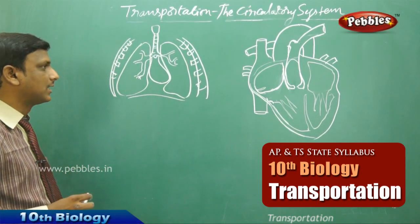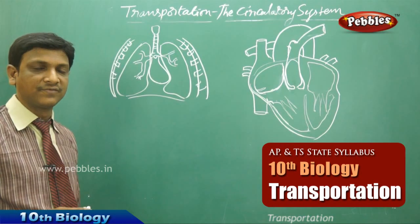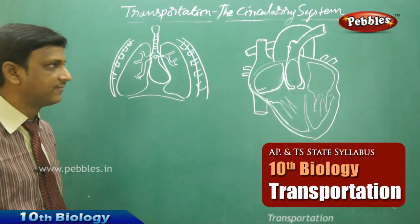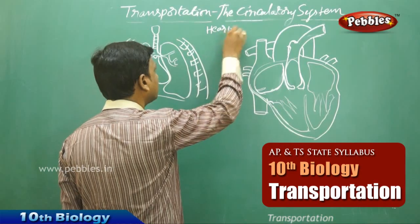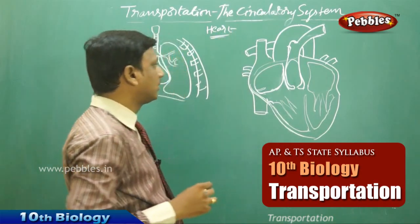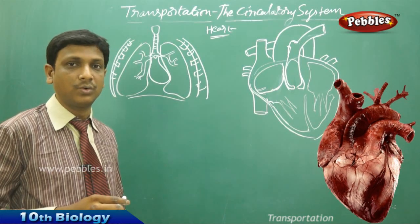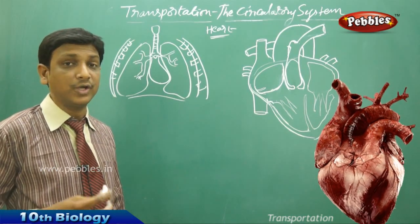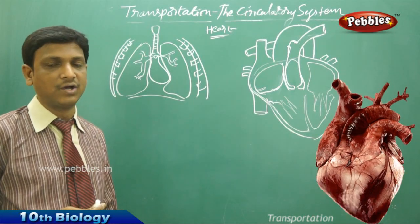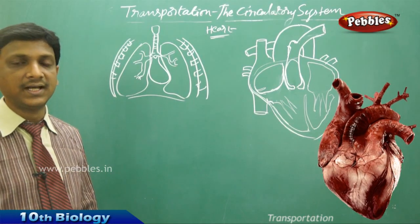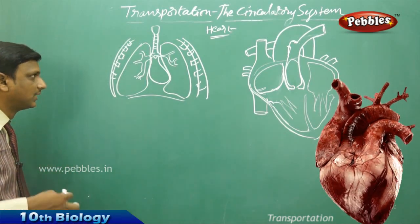Now let us look at the human circulatory system. It has got different parts like heart, blood, and blood vessels. The first thing we're going to discuss is the human heart. The human heart is a very important organ which has to work continuously throughout life. If it stops beating, life ends because the supply of nutrients and oxygen stops when the heartbeat stops.